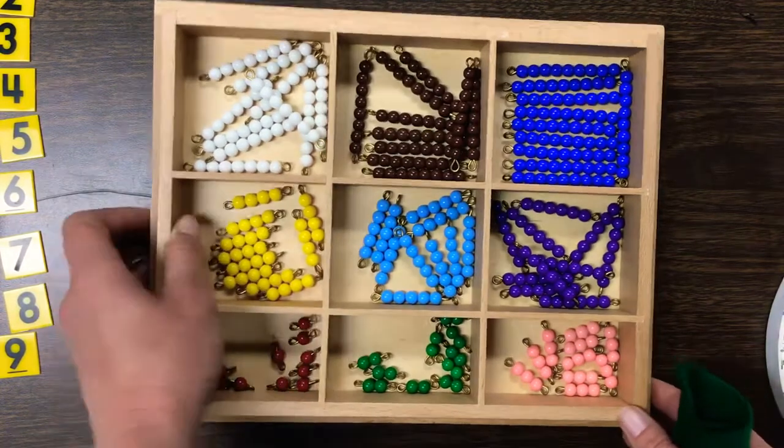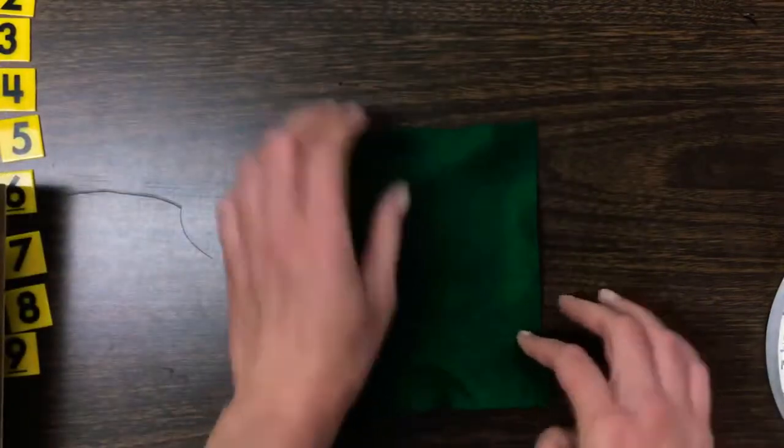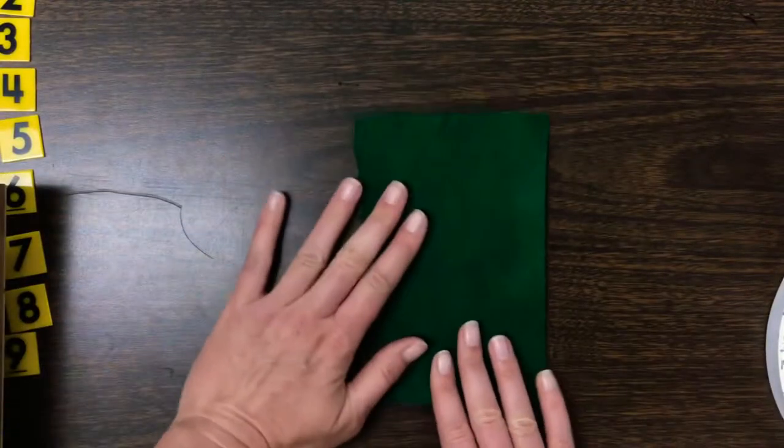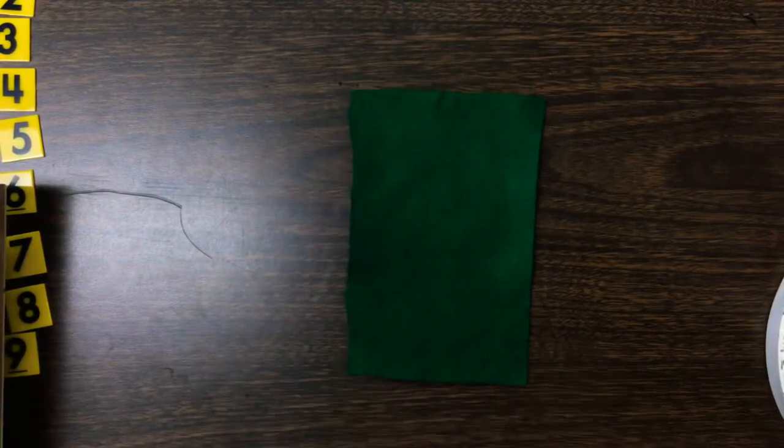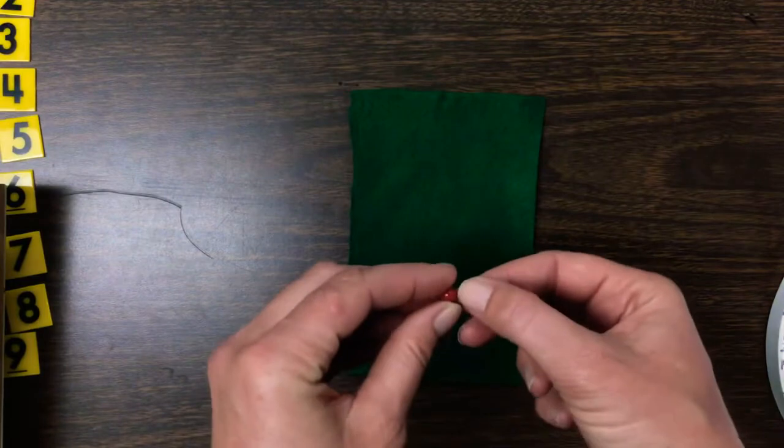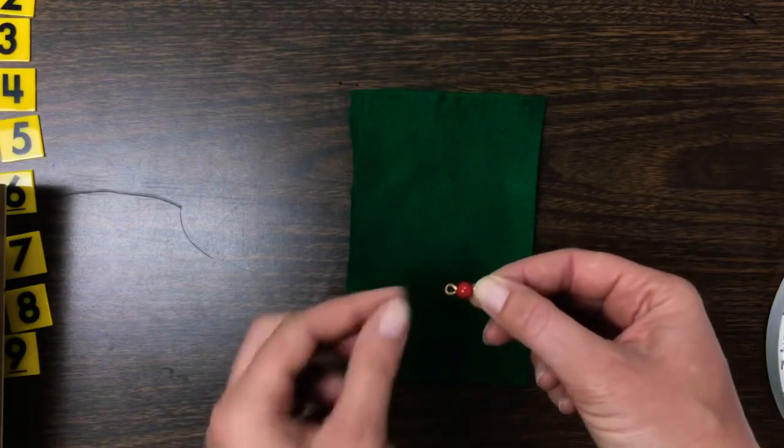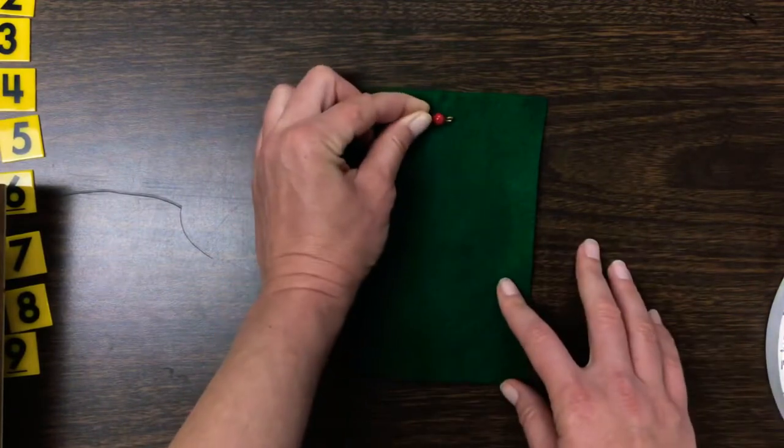Okay, so I'm going to set this aside and I'm going to set down a green piece of felt so that my beads don't roll off the table. The very first bead is one and that goes at the very top.